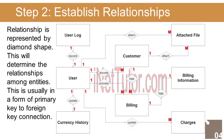After we have specified our entities, it is time now to connect or establish a relationship among the entities. 1. The user encodes the customer information — 1-to-many relationship. 2. The user processes the billing information — 1-to-many relationship. 3. The user logs the login history — 1-to-many relationship. 4. The user updates the currency history — 1-to-1 relationship. 5. The user updates the charges information — 1-to-many relationship. 6. The user can attach a file to the billing information — one-to-many relationship.